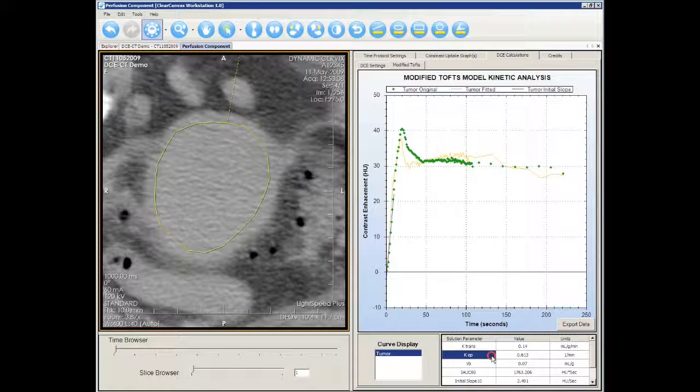K-Trans, KEP, and VB are the parameters extracted from the curve fitting. IAUC 60, the initial slope, and the peak are the results of the semi-quantitative analysis.